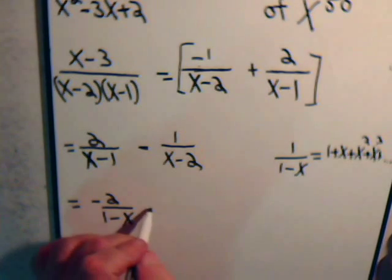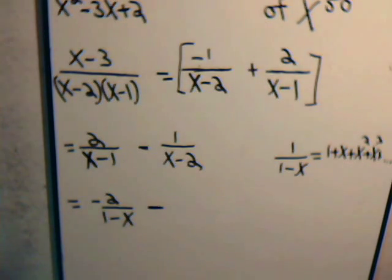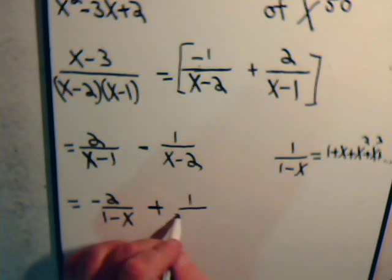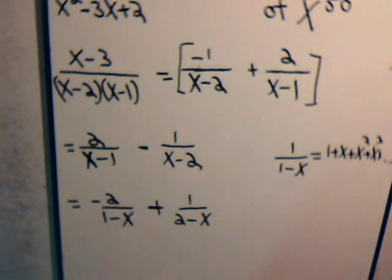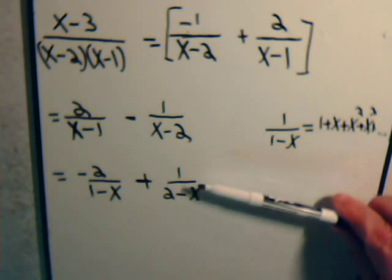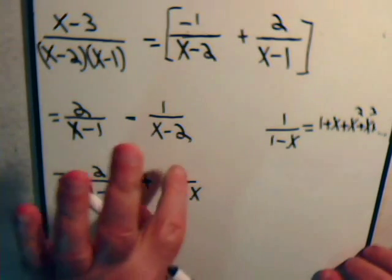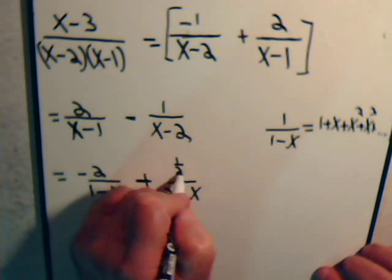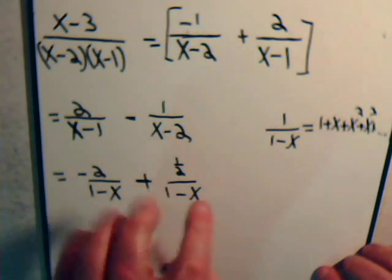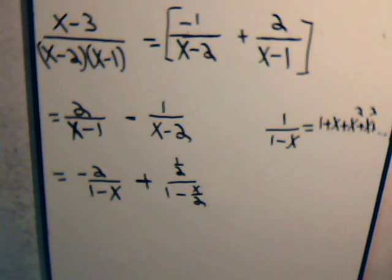And then here we have minus 1 over x minus 2. So then we can make this plus 1 over 2 minus x. We want to get it in the general format, though, of a 1 minus x expression. So if we multiply top and bottom by 1 half, that will give us, on top, 1 half. Then we'll have 1 minus x over 2. Like this.